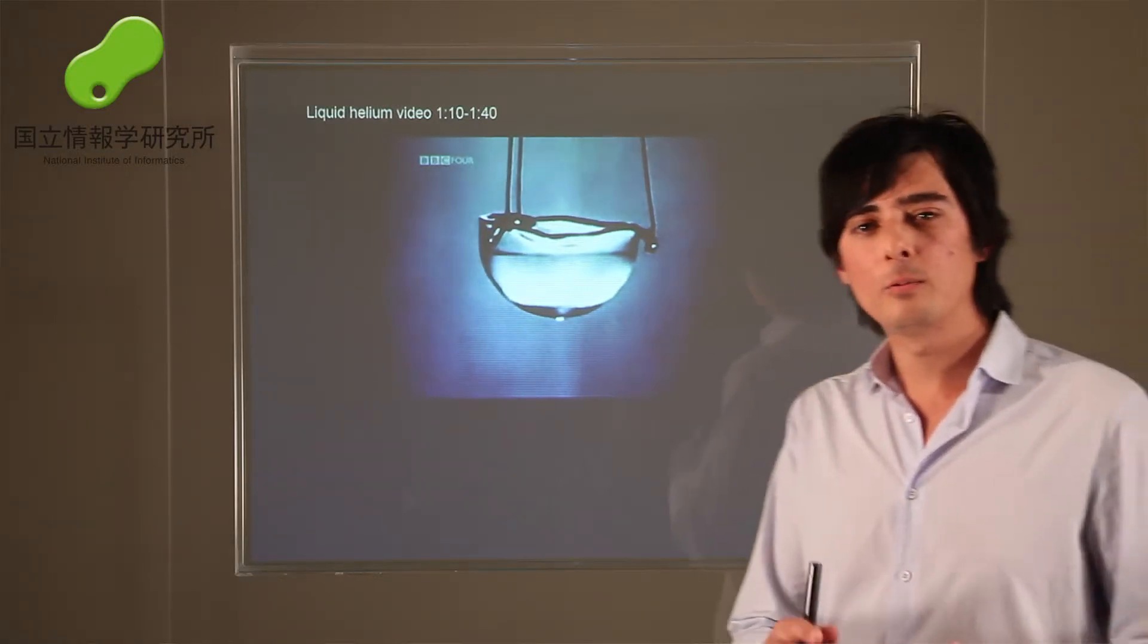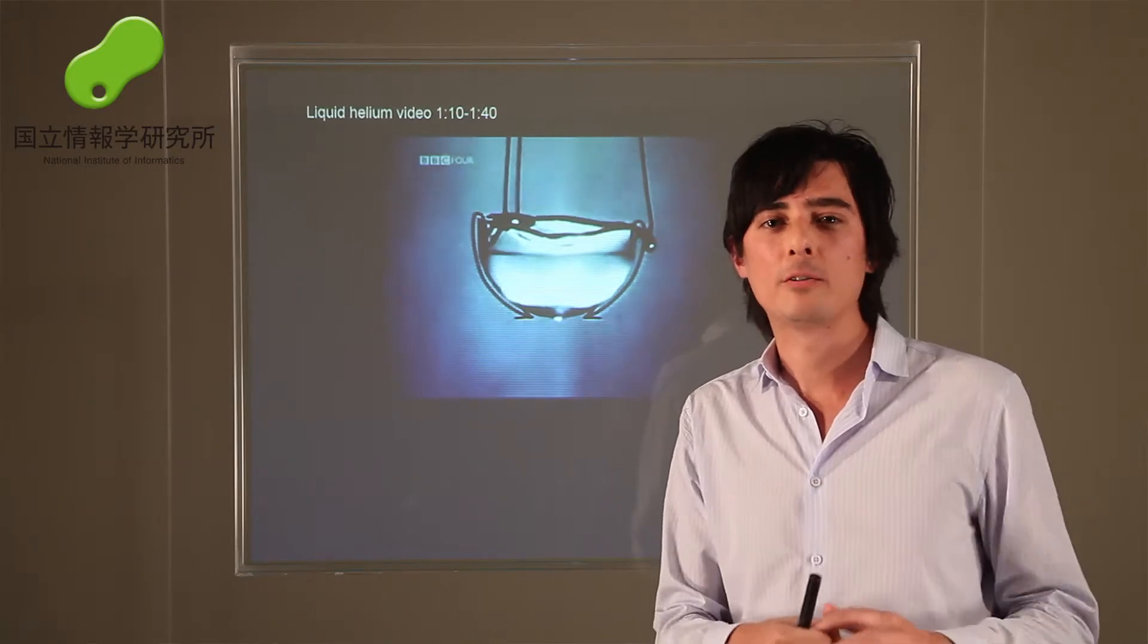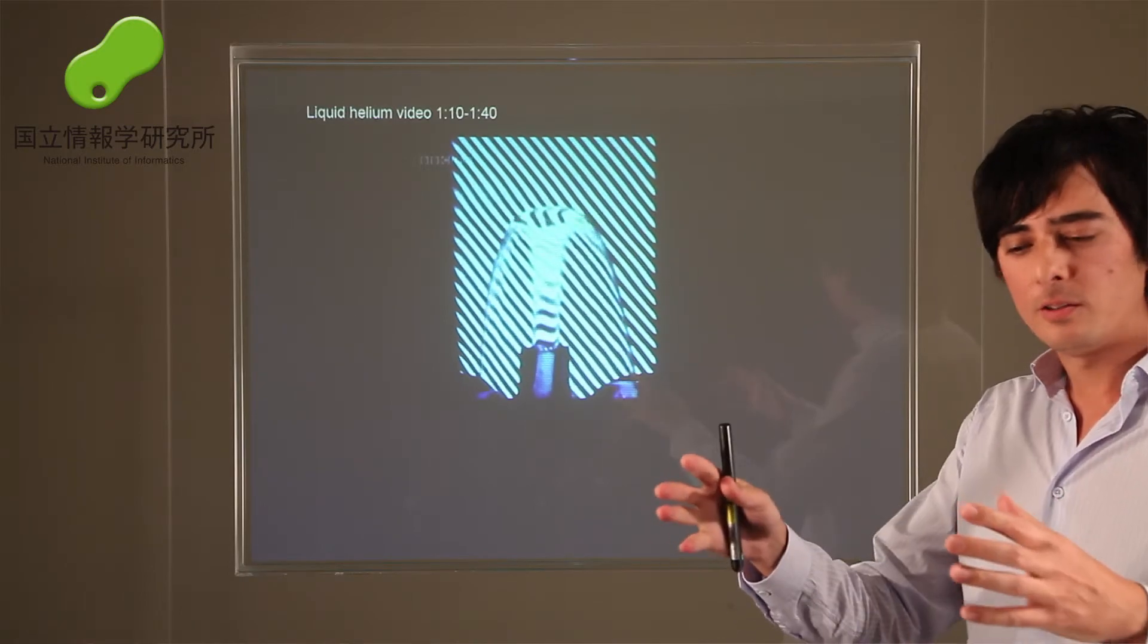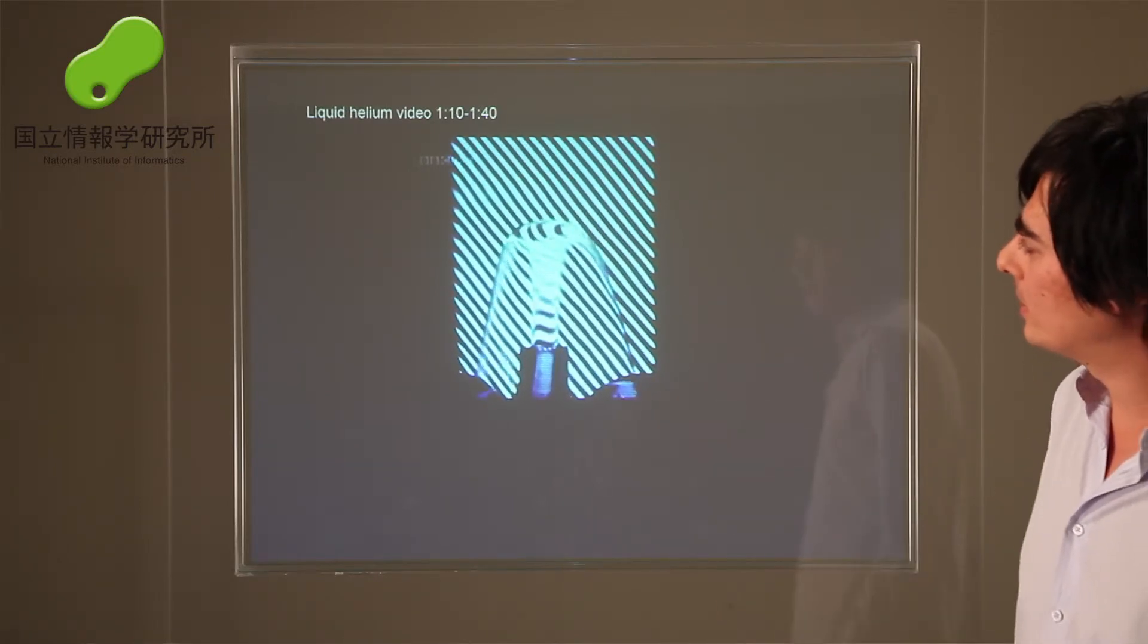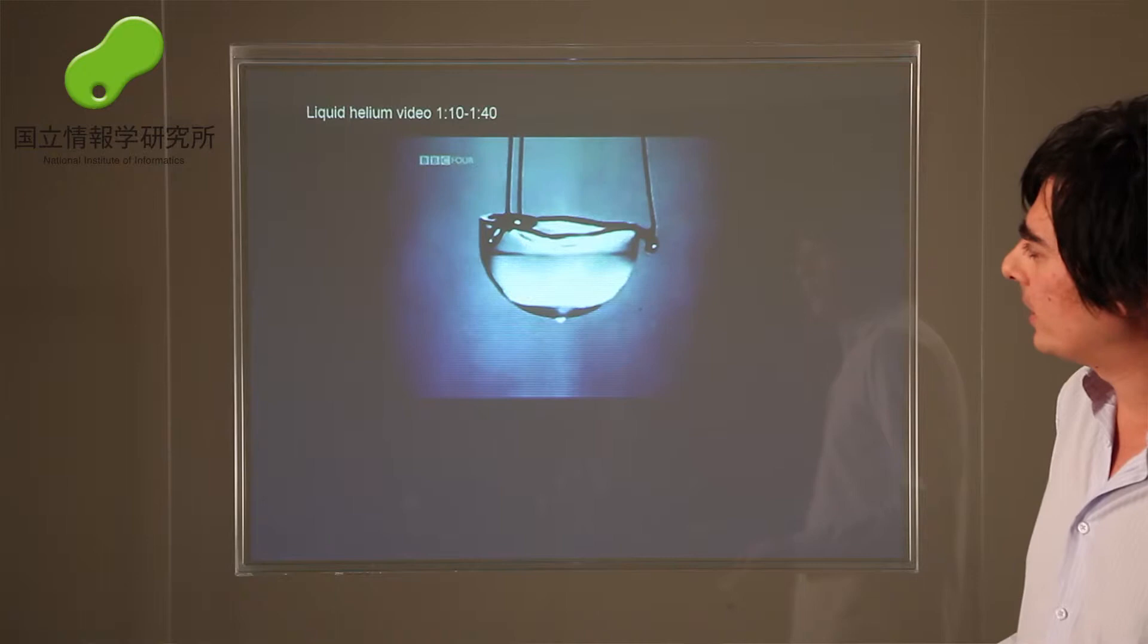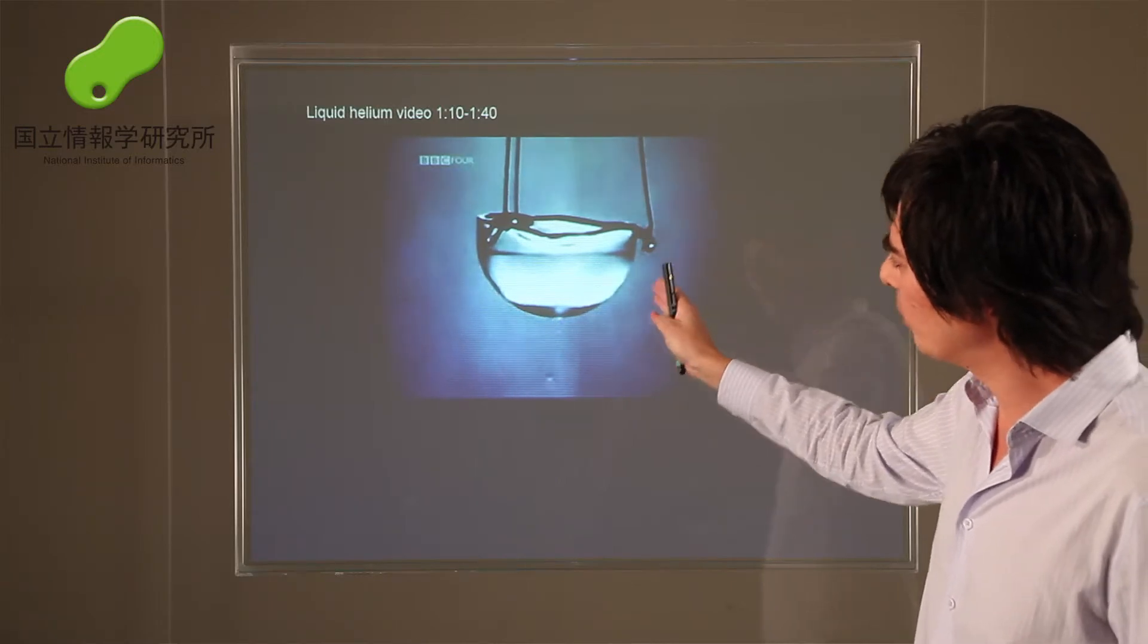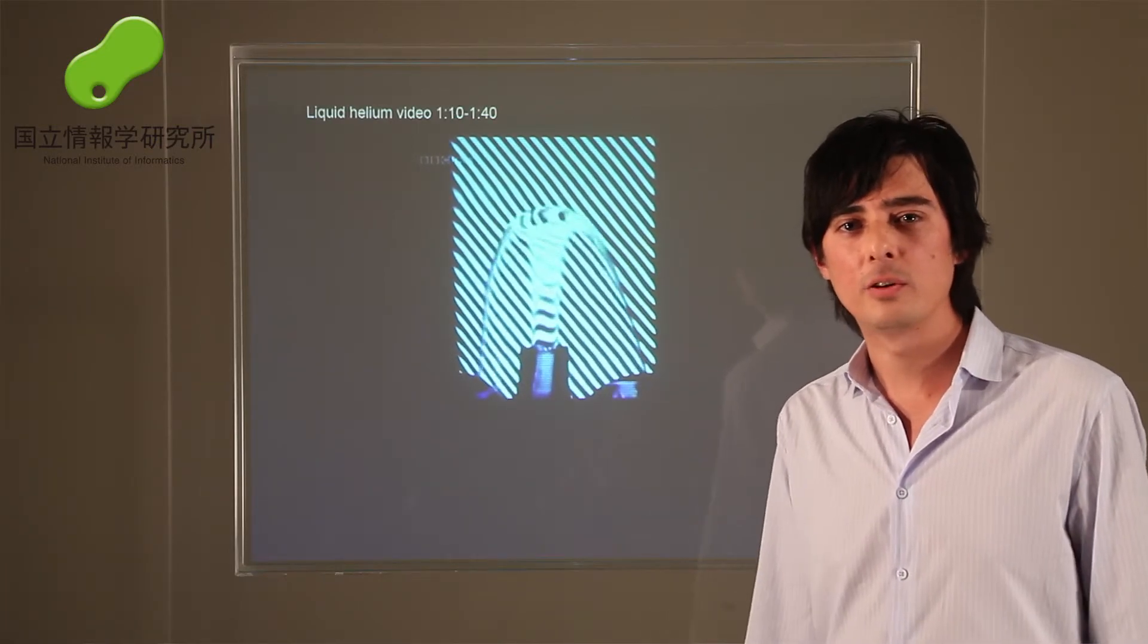The interesting thing about Bose-Einstein condensates is that normally the wave function of matter is something you can only see at a very microscopic level. But in Bose-Einstein condensates, you can see a really macroscopic wave function. You see quantum mechanics not at this very small level, but at a large level, like you're seeing here. This is liquid helium, which is a kind of related effect to Bose-Einstein condensation. You get very interesting effects you don't normally see, like this liquid can flow out of the container almost against gravity. This is all because it has this very strong quantum mechanical nature.